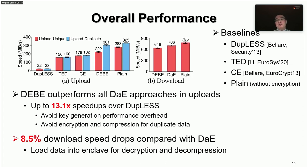We compare DBE with three DAE approaches: Dupless, TED, and CE. The results show that DBE outperforms all DAE approaches in upload performance. The reason is that DBE avoids key generation overhead as well as encryption and compression for duplicate data. For example, DBE achieves up to 30x speedup over Dupless when uploading duplicate data. For download speed, DBE incurs around an 8.5% download speed drop compared to DAE due to ocalls for moving chunks into the enclave for decryption and decompression, but we argue this overhead is limited.